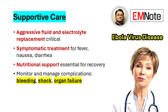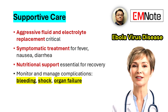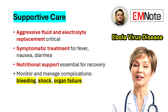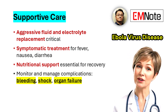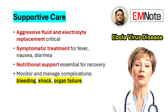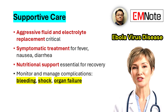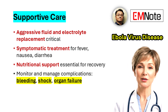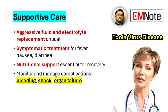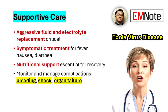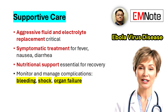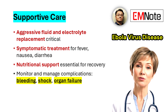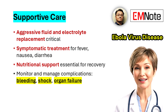The management of Ebola virus disease is primarily supportive and must occur in specialized treatment units with high-level infection control practices. Early and aggressive supportive care significantly improves survival outcomes. Fluid and electrolyte management is critical, as patients often suffer severe dehydration due to vomiting and diarrhea. Intravenous fluid resuscitation and correction of electrolyte imbalances are essential to maintain hemodynamic stability. Nutritional support should be maintained throughout the course of illness.